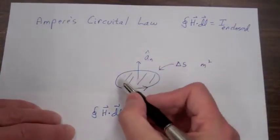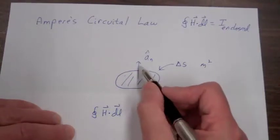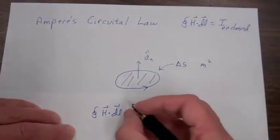If you put the fingers of your right hand in the direction of the integration, your thumb points in the direction of the current enclosed.